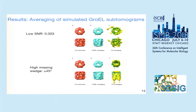Here I show some results. We simulated 200 GroEL structures with random rotation and translation. At low signal-to-noise ratio of 0.003, our method, shown in the middle, successfully recovers the structure as compared to the true structure. But fast alignment recovers only some torn pieces. At a high missing wedge from minus to plus 45 degrees, our method recovers the structure as compared to the true structure, but the fast alignment recovery is highly distorted.